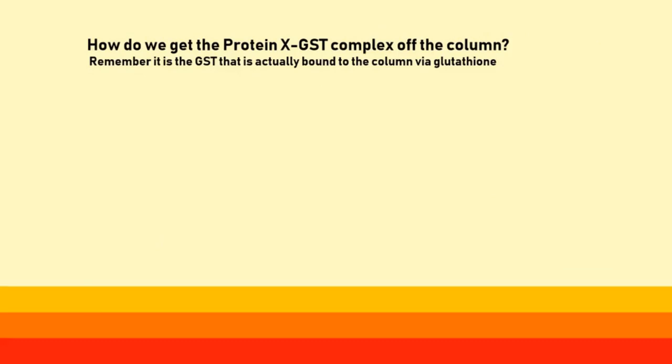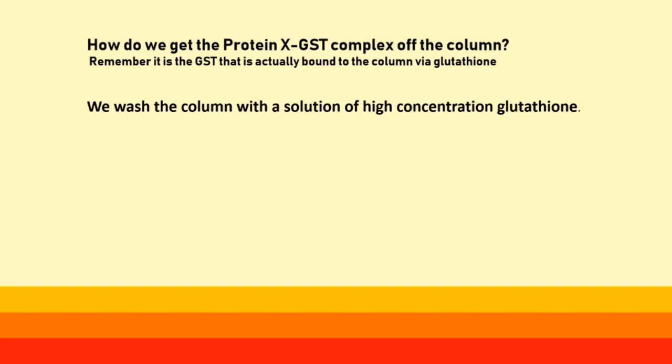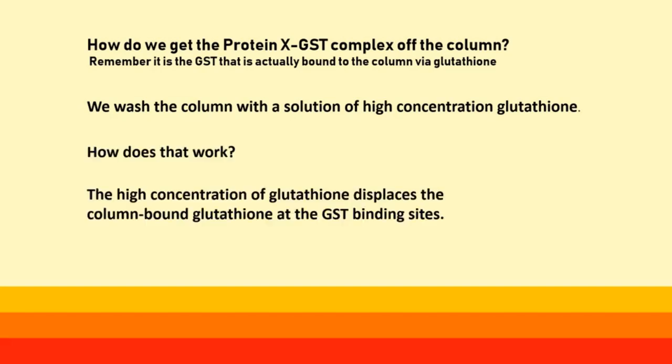How do we get the protein X–GST complex off the column? Remember, it is the GST that is actually bound to the column via glutathione. We wash the column with a solution of high concentration glutathione. The high concentration of glutathione displaces the column-bound glutathione at the GST binding sites.